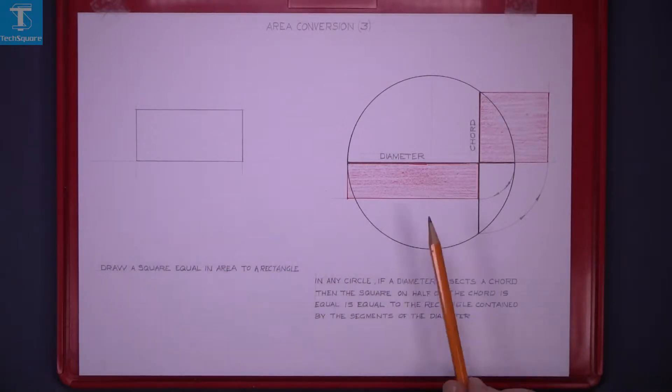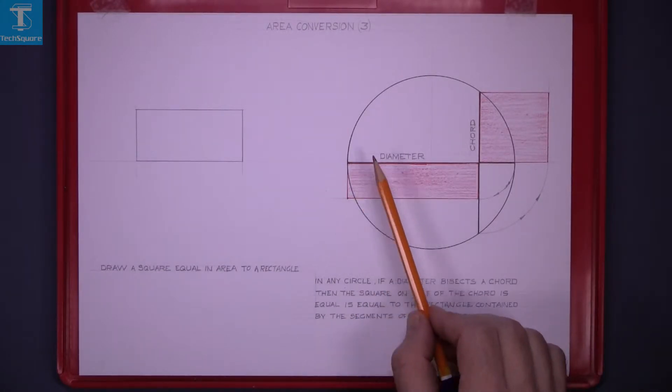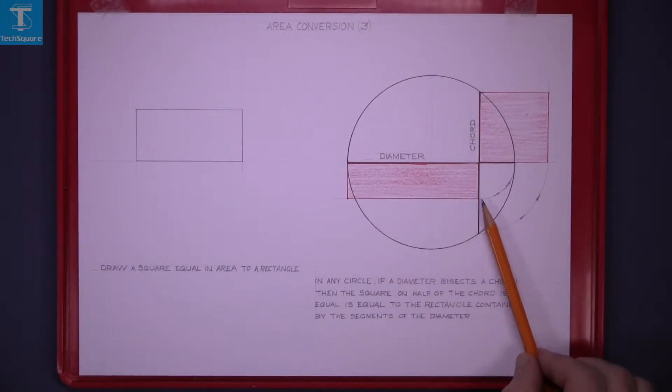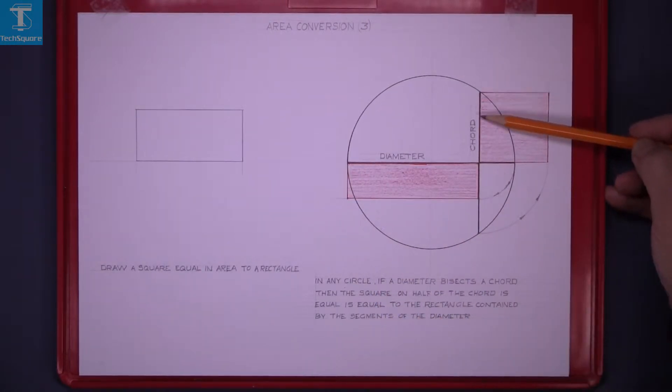Before we do that, we must understand this over here. Here we have a circle and a diameter drawn through it, and a chord drawn vertically.